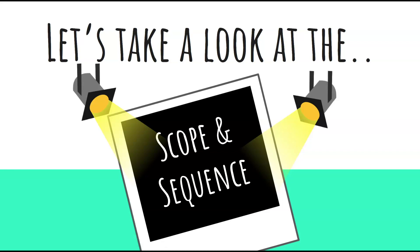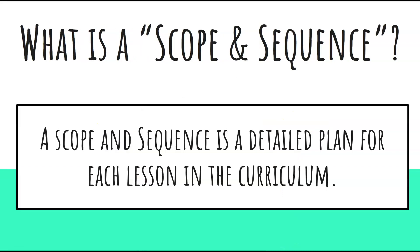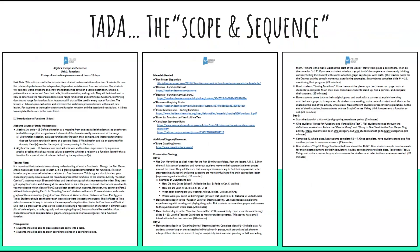Let's take a look at the scope and sequence. A scope and sequence is a detailed plan for each lesson in the curriculum. The scope and sequence! For this video, we will be looking at Algebra 1, Unit 1, Lesson 1. But rest assured, all scope and sequences follow the same format for each of the courses in the A-Plus College Ready curriculum.